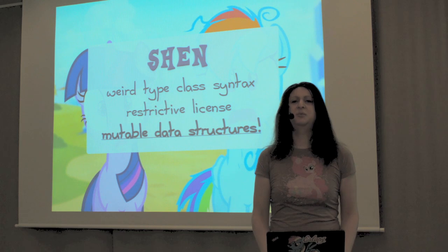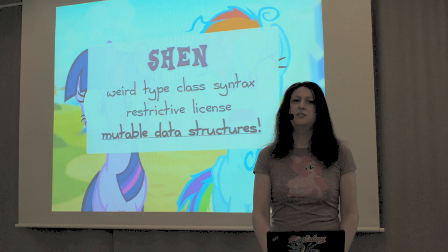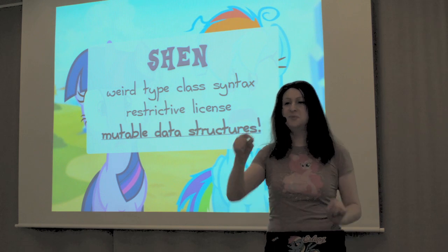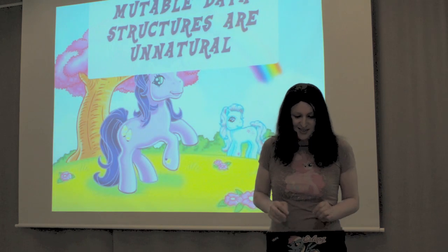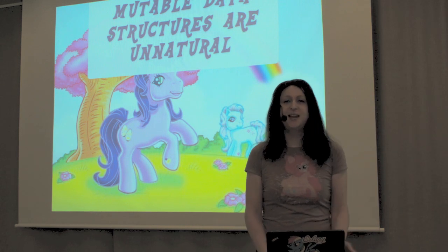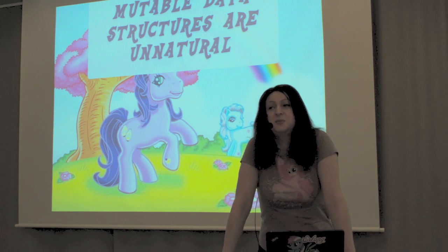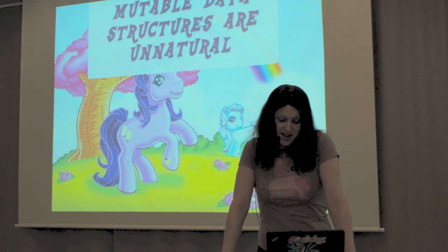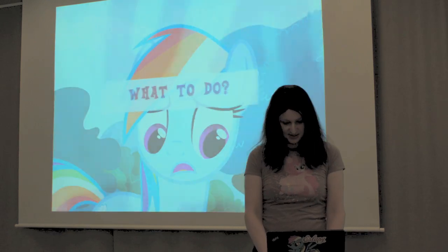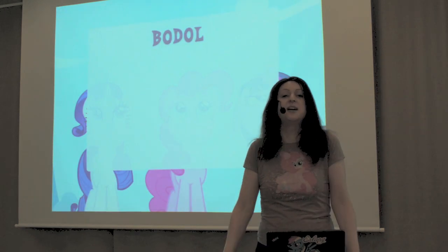The worst part, though, is it's actually got mutable data structures. There's an array data structure in Shen where you've got commands that can go into the data structure and modify things, which is completely and abhorrently unnatural. You should not be doing this in a modern language at all. Sadly, while on the surface Shen seemed like such a beautiful thing, it turned out it had its flaws. So, what can you do then? What's the logical next step? Obviously, you're going to write your own. And so I did. I named it Bodol.